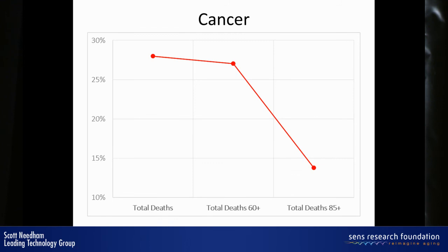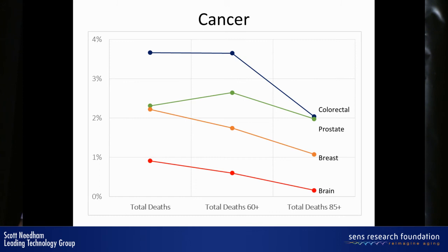Here's cancer — this was a bit of a surprise. Cancer remains the second largest cause of death as a category, but you can see it drops in ranking for those over 60 and then quite dramatically for those over 85. From the reading I've done, there's a lot of research on this drop. It appears to be associated with the fact that cancer's virulence is dramatically reduced in a senescent body. Every individual cancer decreases for those over the age of 85 as a percentage of deaths.